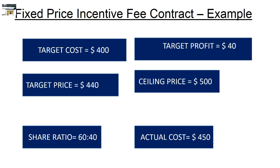Now let's go through the following example. A fixed price incentive contract has the following parameters: Target Cost = $400, Target Profit = $40, Target Price = $440, Ceiling Price = $500, and Share Ratio = 60:40. The project got completed for an actual cost of $450. What is the final price?